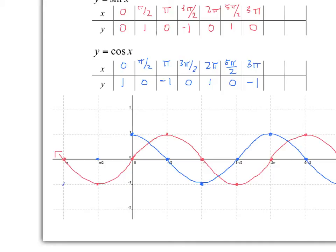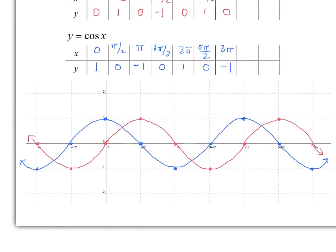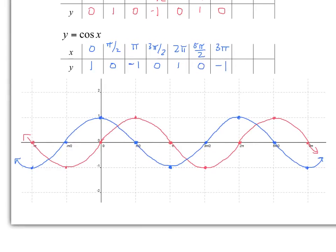So if I was to continue the other way, as I did with the sine graph, this is the graph we get. The y equals cosine x graph is actually just the graph of the sine function translated pi over 2 to the left. Notice that if I moved all the points pi over 2 to the left, I would get the cosine graph.